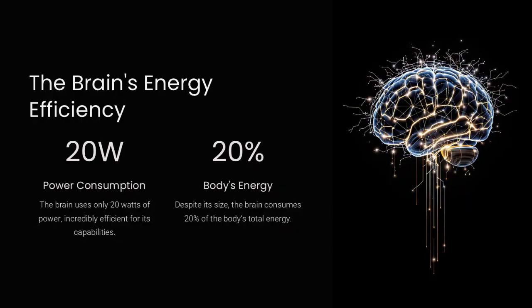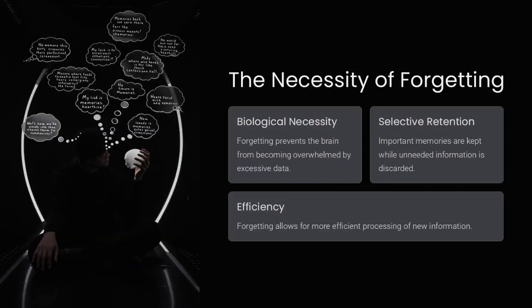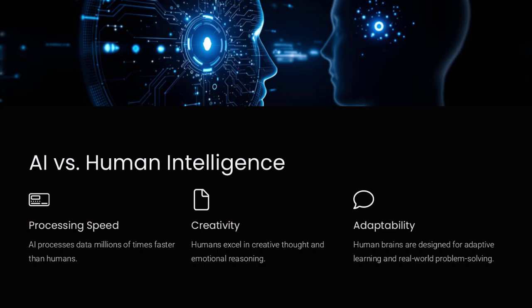The brain's memory system is not like a hard drive. It is associative, meaning that information is stored in overlapping networks rather than in discrete locations. This allows for creativity and flexible thinking, but also results in forgetting and interference between similar memories.